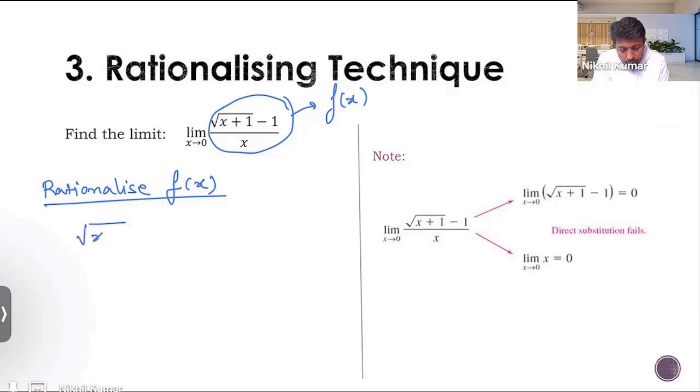We have to multiply the numerator with its conjugate, which is this. And if you are multiplying something in the numerator, we must multiply the same thing, the same quantity in the denominator also. That's how we all rationalize, right?